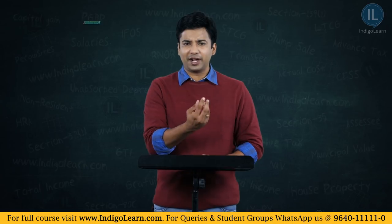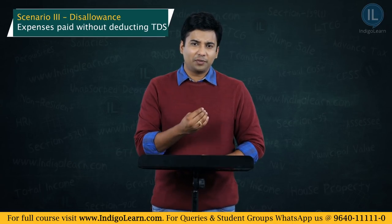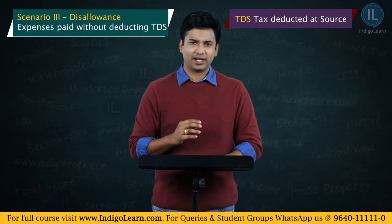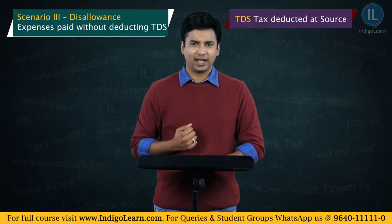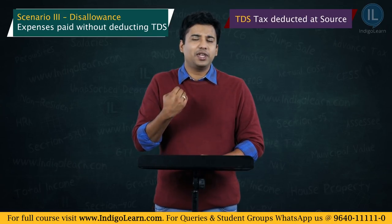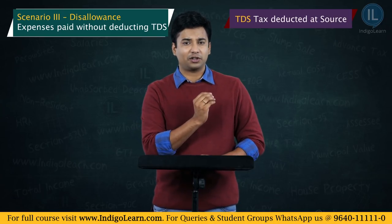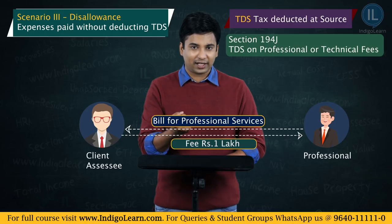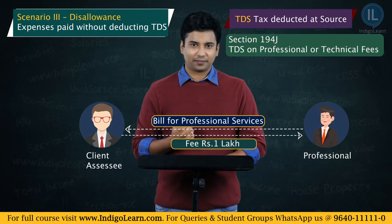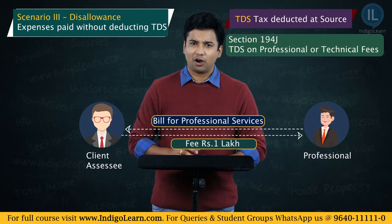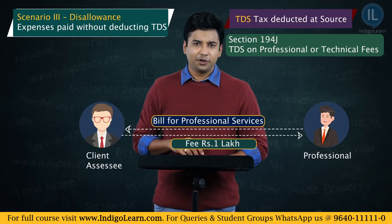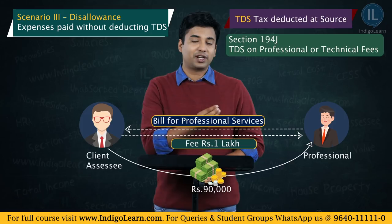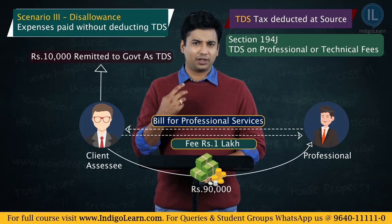Similarly, certain payments require TDS — Tax Deduction at Source. For example, under section 194J, if you are paying for professional services, you must deduct 10% as TDS. So if I bill you 1 lakh, you pay me only 90,000 and remit 10,000 directly to the government as my tax. This is good for the government since they collect tax at source, and good for me because the burden is spread across small deductions from each payment.